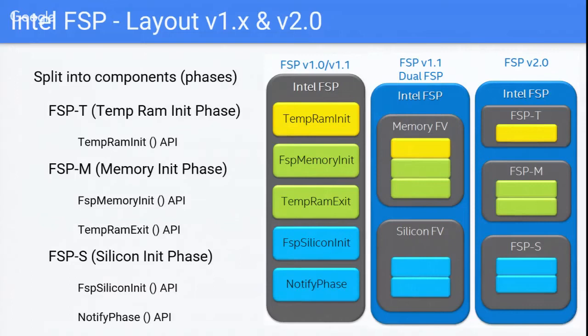In FSP 1.1, we extended the three APIs—FSP MemoryInit, TemprimInit, and SiliconInit. In FSP 1.0, everything was one FSP Init API. We broke it down to give more flexibility to the bootloader and make it a linear operation. That was part of the engagement with the community—Aaron and Duncan—to make it a linear flow and flexible for the bootloader to do certain things, working within the ROM stage, RAM stage, and Google's Chrome read-only model.